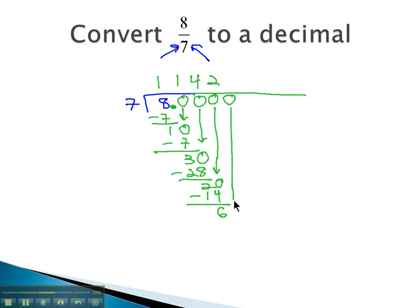Add another 0, bring it down. 7 goes into 60 eight times, because 7 times 8 is 56. Subtract, and we get 4.